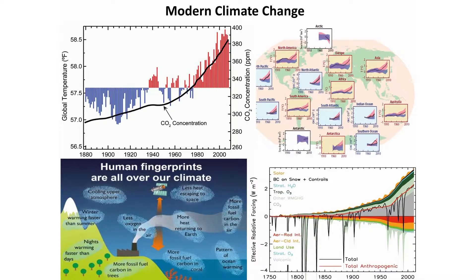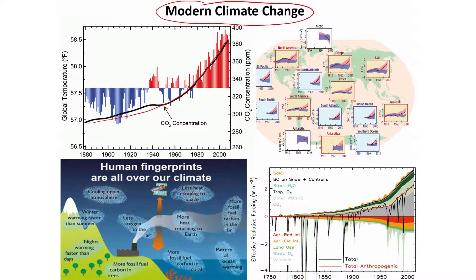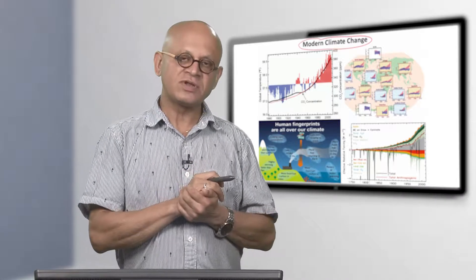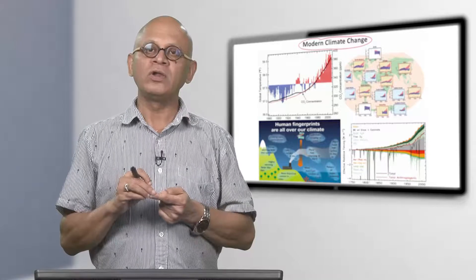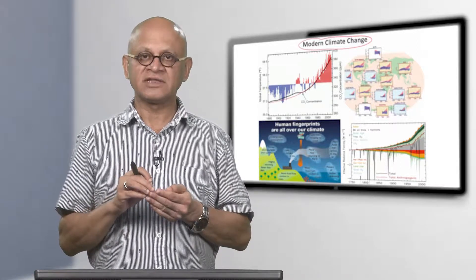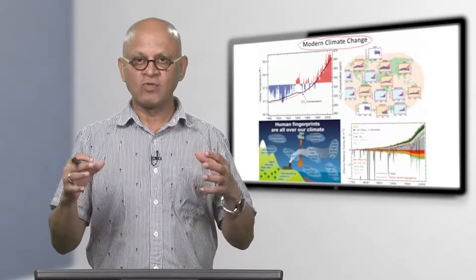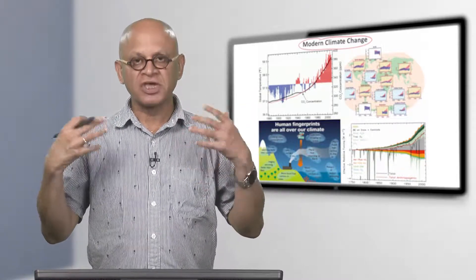We are getting very close to the topic of modern climate change, so that we can transition into future climate change. The biggest thing to learn here is that we have been measuring carbon dioxide very actively in the last 70 or 80 years, but before that, going back to the beginning of the industrial revolution, we have a very good sense of how much carbon dioxide we started emitting because fossil fuels like coal, petrol, and natural gas are very valuable commodities, so we always track how much we produced and consumed.